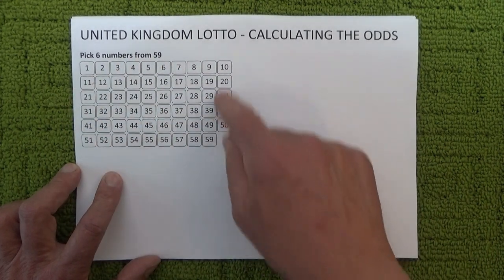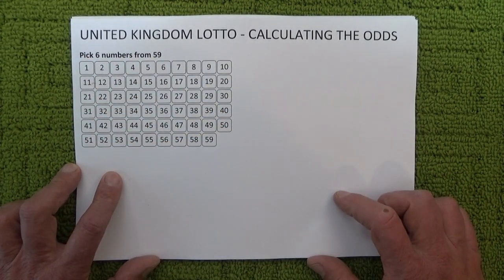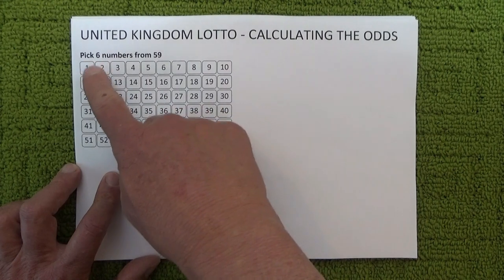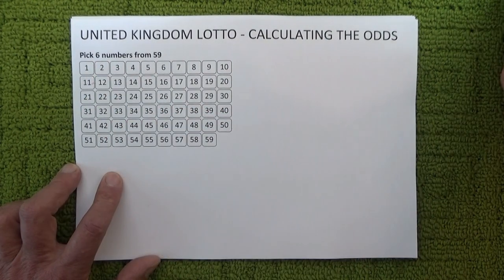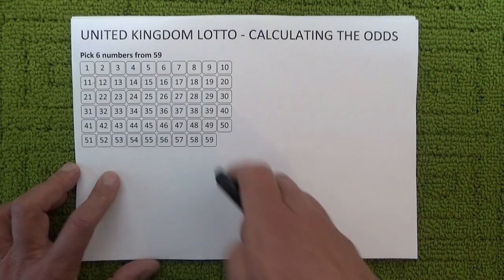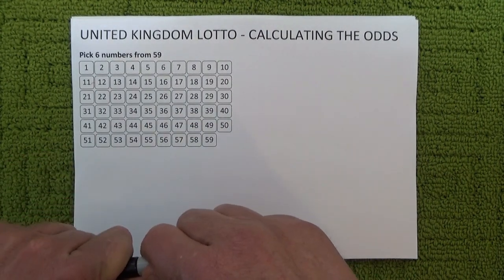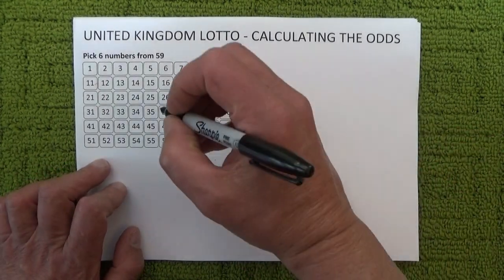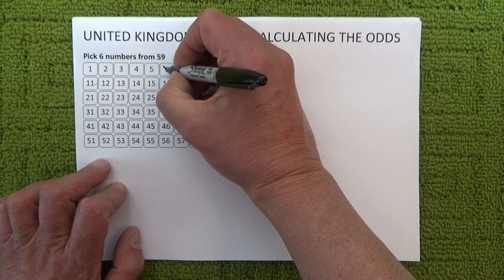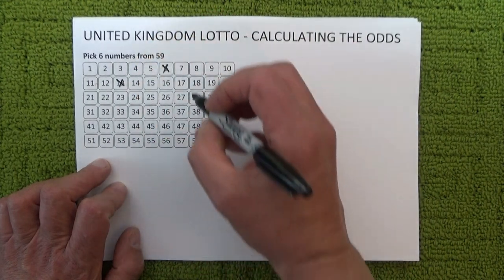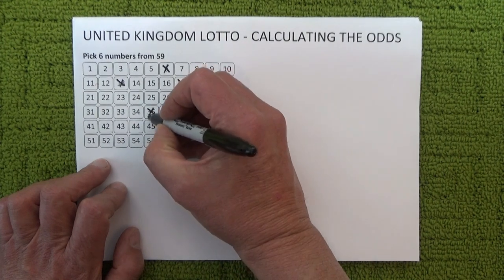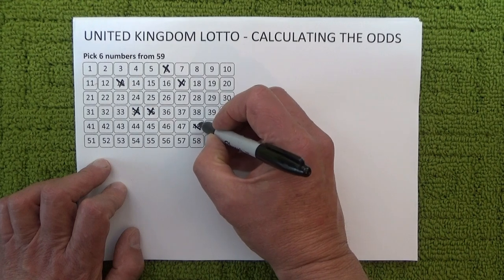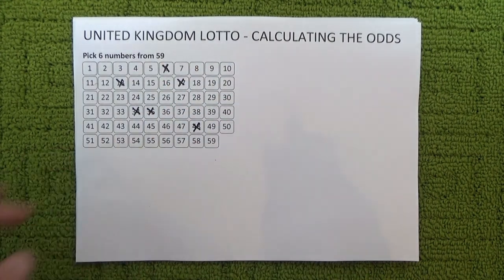I've created this template which would be very similar to the coupon you'd fill out for your UK Lotto. You've got a total of 59 numbers and I'm going to pick six numbers from 59 — just randomly pick any six numbers to show you how the odds are calculated. So I'll go with 6, 13, 17, 35, 34, and 48 — there we go, I've selected six numbers.